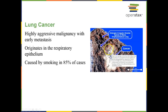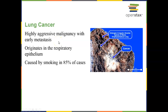Lung cancer is a very aggressive form of cancer that often metastasizes to other organs, but it originates in the respiratory epithelium. Lung cancer is often also associated with other disorders — you may have lung cancer along with emphysema or other problems. Most lung cancers are associated with smoking, though not all.